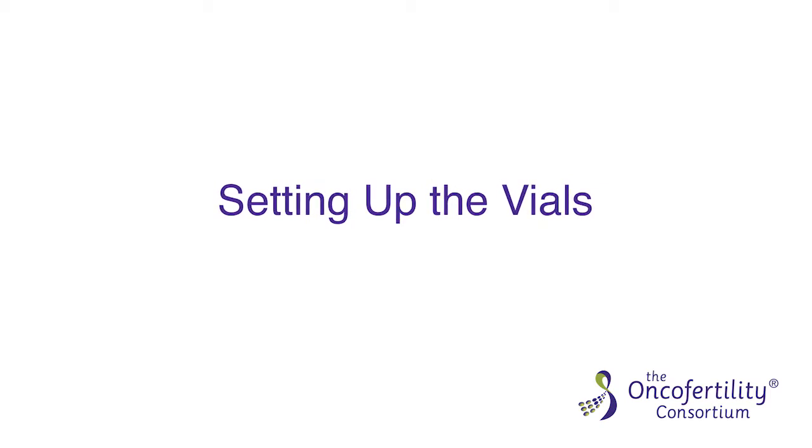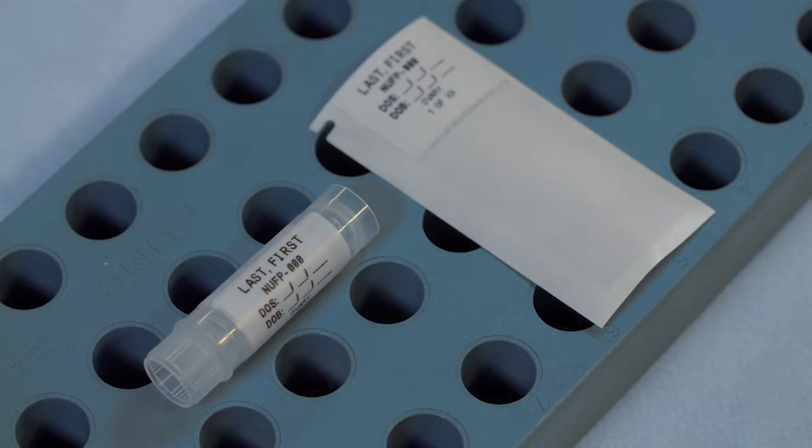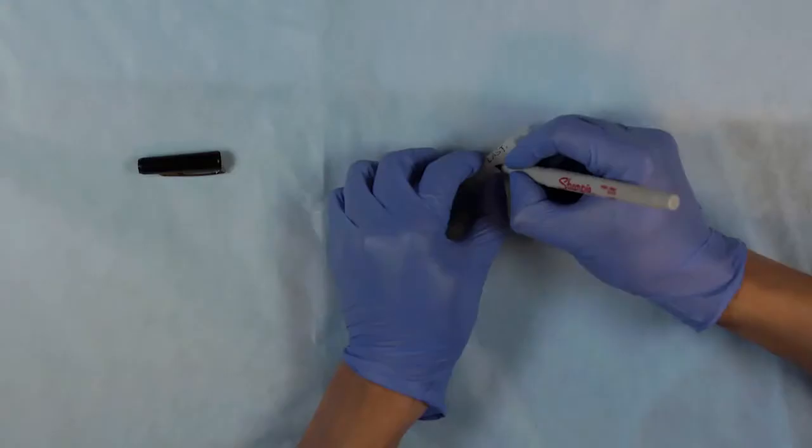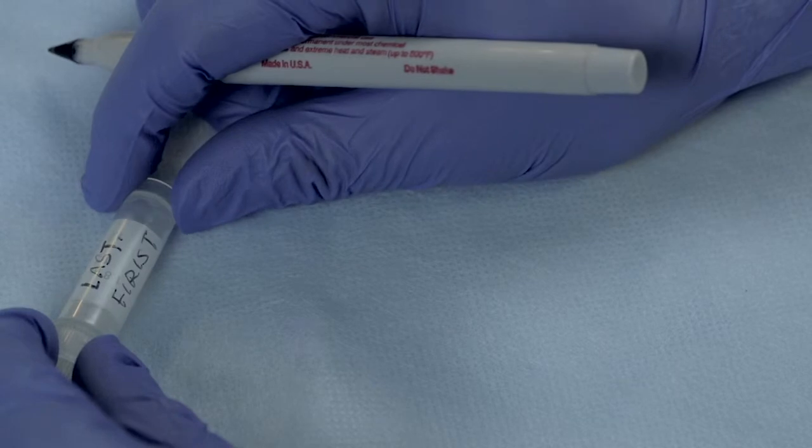Setting up the vials is the first step. It is recommended that you use a mechanical labeler because of the amount of information that needs to be on each label. Please refer to the labeling protocol in the online NPC manual. We also recommend that you label each vial with the patient's name by hand, just in case the labels were to come loose.